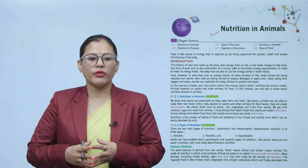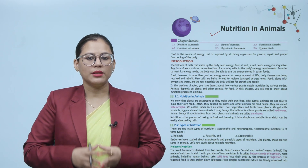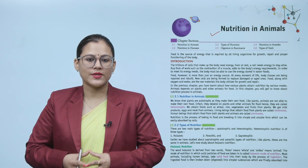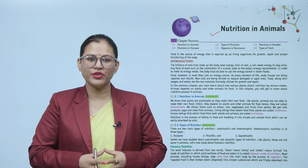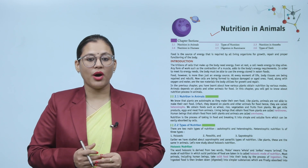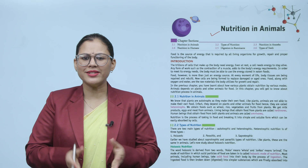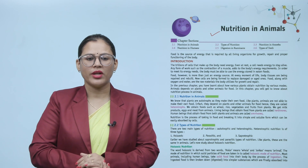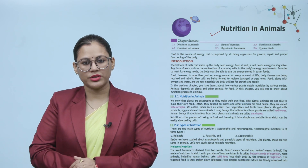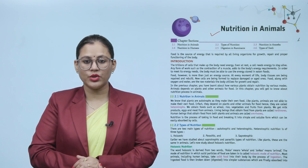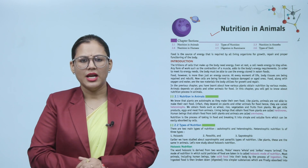Food along with oxygen and water are the raw materials the body utilizes for growth and repair. In the previous chapter, you learned about how various plants obtain nutrition by various modes. Animals depend on plants and other animals for food, and in this chapter you will get to know about nutrition processes in animals.